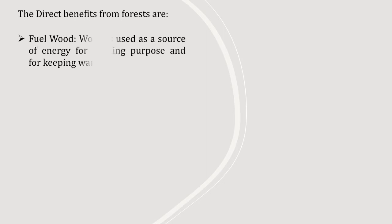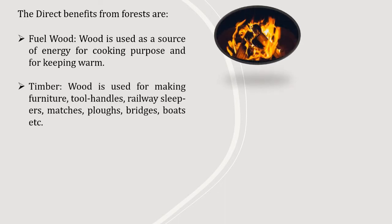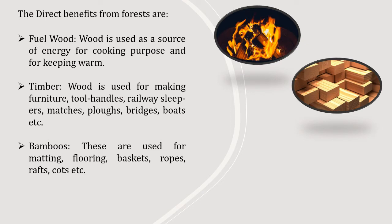Let's have a look at the direct benefits from forest. Fuelwood: wood is used as a source of energy for cooking and for keeping warm. Wood is also used for making furniture, tool handles, railway sleepers, matches, bridges, boats, etc. Bamboos are used for making flooring, baskets, rope, rafts, coats, etc.